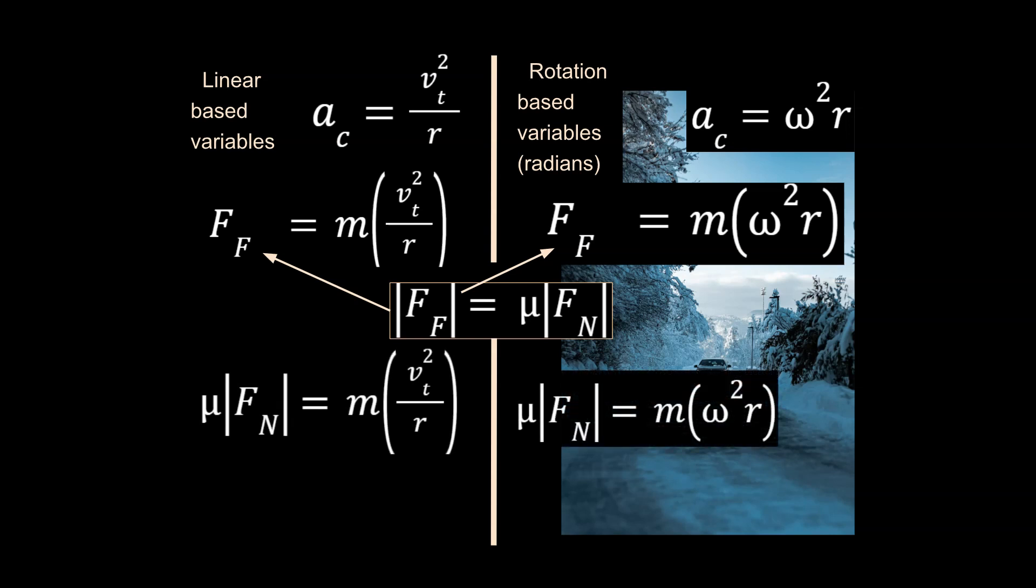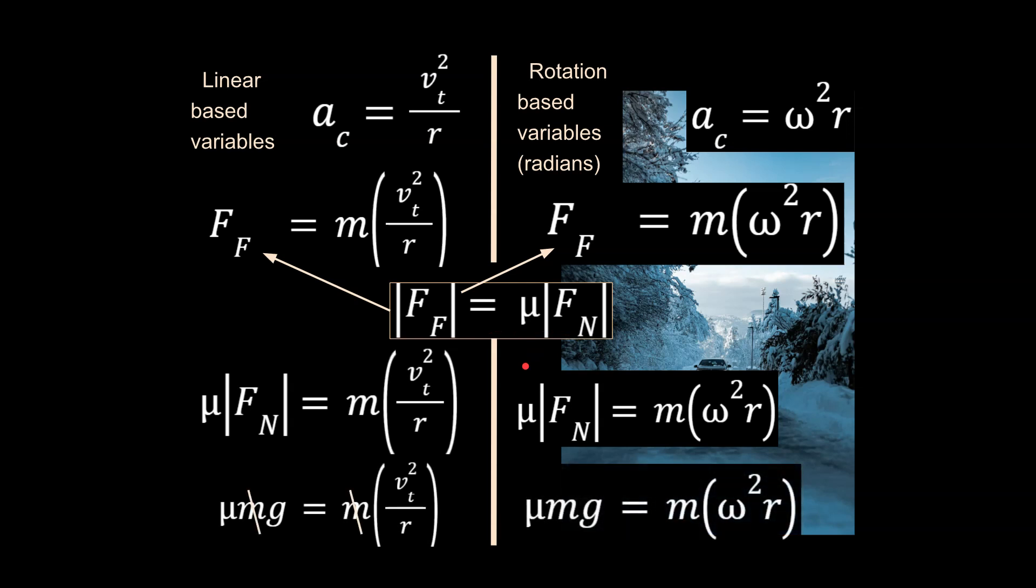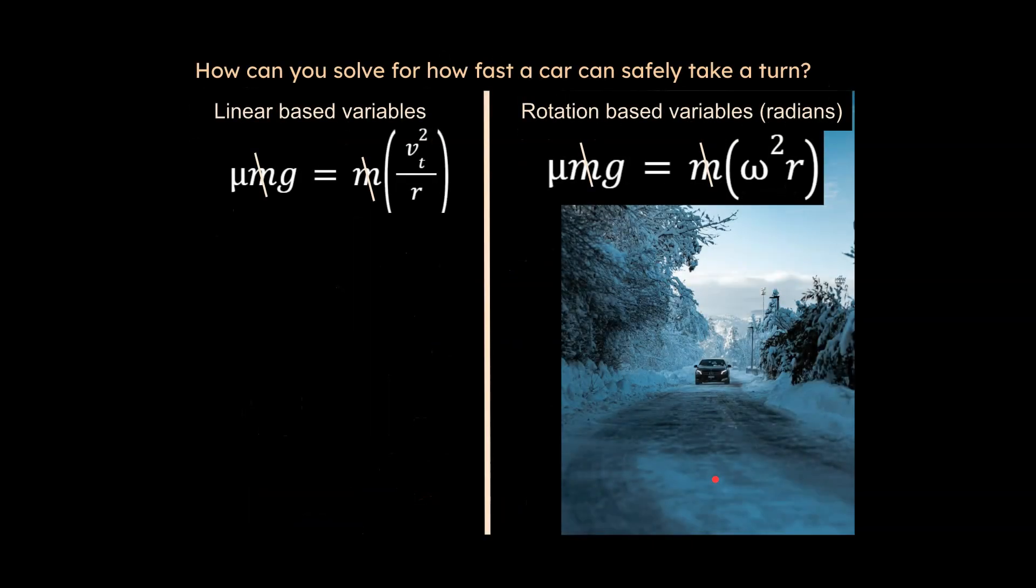All right, so we go ahead and sub in the values for what the force due to friction is equal to, and then we can go about and isolate for the speed at which this car can take a turn. So we're going to solve for this over here, or we're going to solve for this over here, depending on what type of units we have.